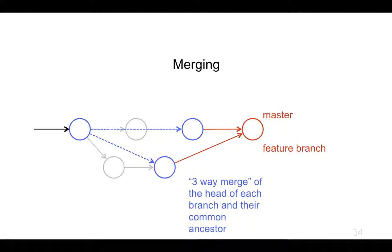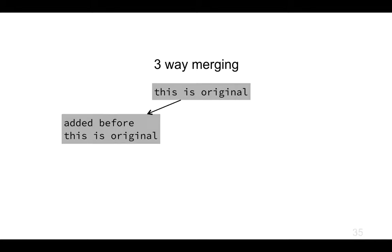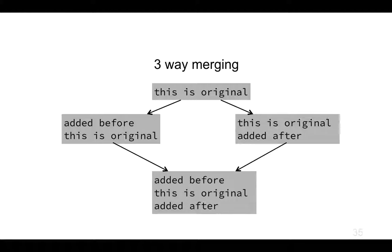Before showing this live in git at the command line, let's pose a question. Suppose our repository just contained the text 'this is the original.' In the left branch, someone added text before it — 'added before, this is the original' — and in the right branch, someone added text afterwards — 'this is original, added after.' Git can look at this and say: someone added a line before, and someone added a line after, so I can merge both — add the line before and add the line after — and that works just fine.